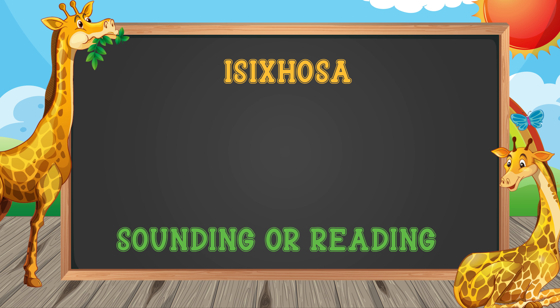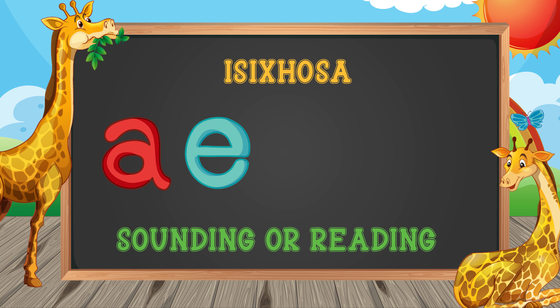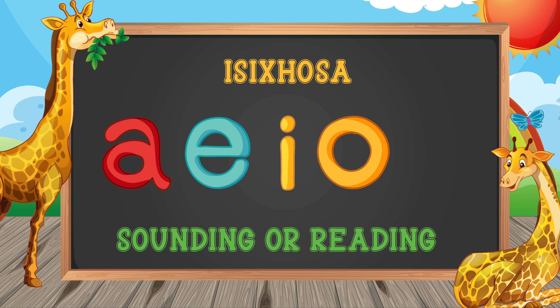Now we sound or read these letters in Isitosa language. How do we sound or read the letters a, e, i, o, u in Isitosa?